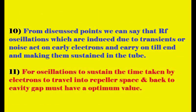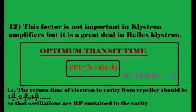The oscillations initially induced due to noise or transients are carried forward and sustained in the tube to produce microwave oscillations. For these oscillations to be sustained, the time taken by the electron to travel into the repeller space and back to the cavity gap must have an optimum value satisfying the sustaining condition.